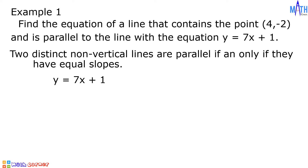y = 7x + 1 is already written in slope-intercept form. Let us recall that in y = mx + b, m is the slope and b is the y-intercept. In y = 7x + 1, m is equal to 7.